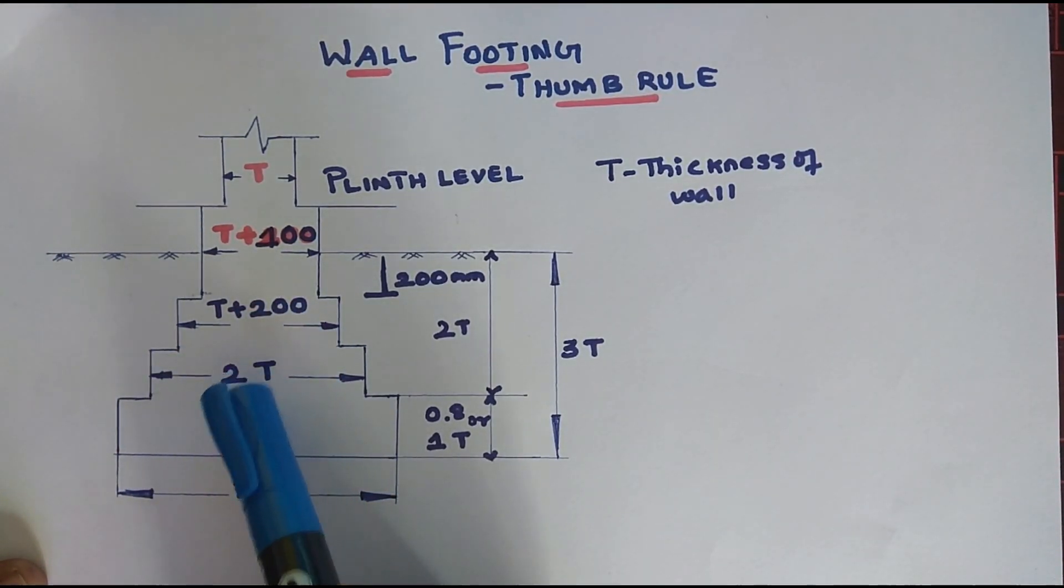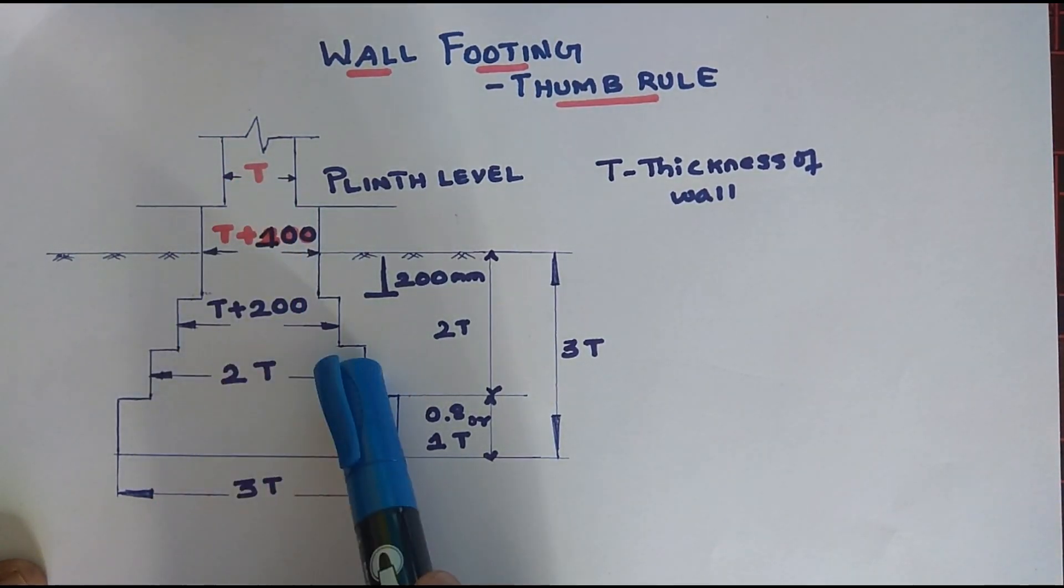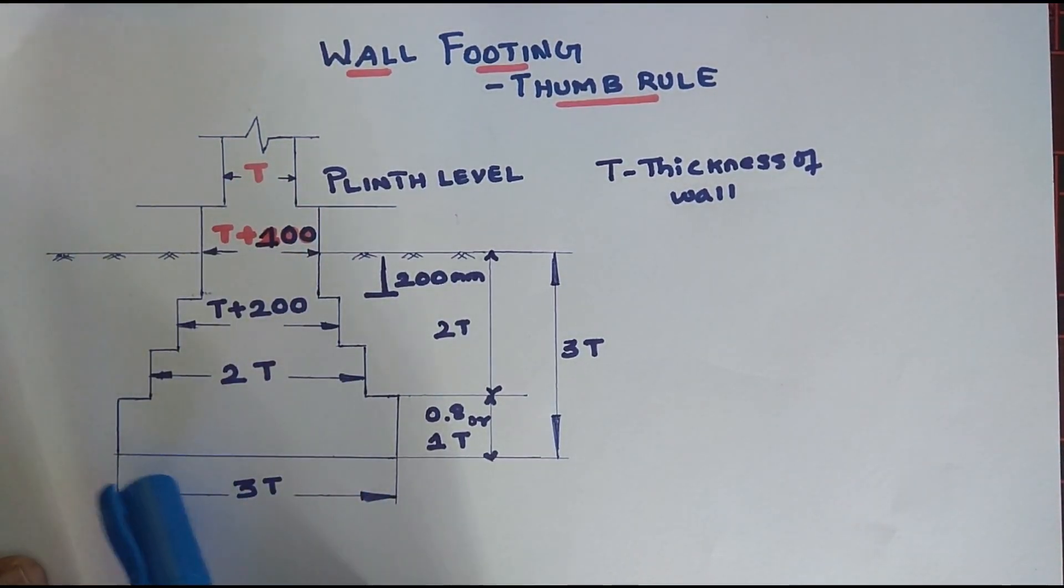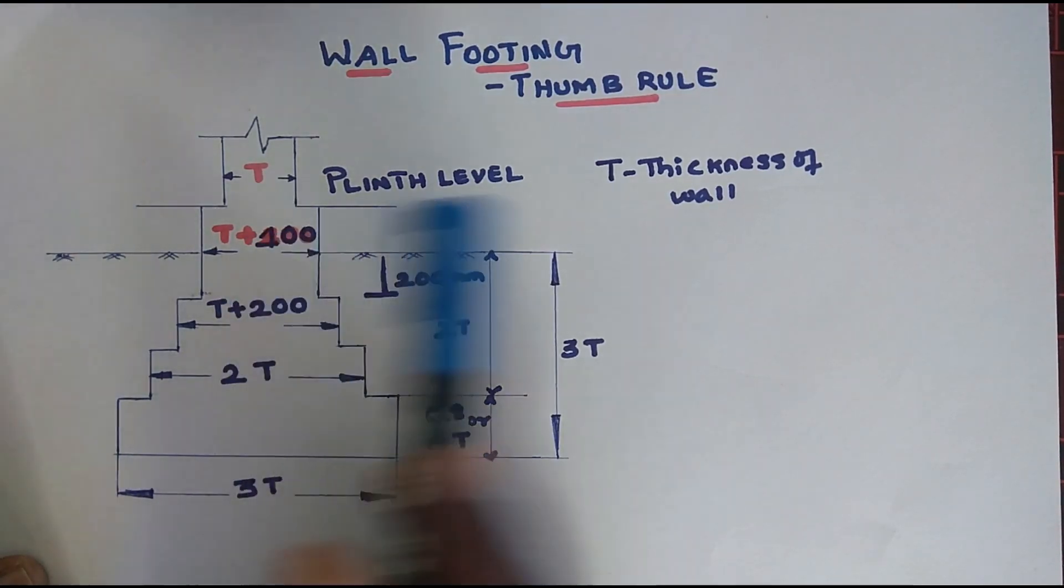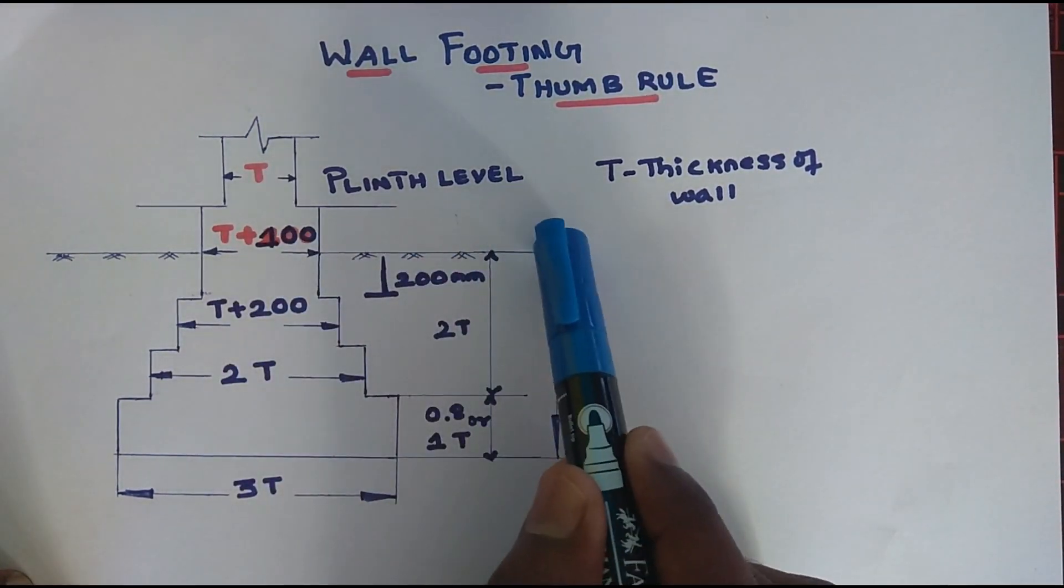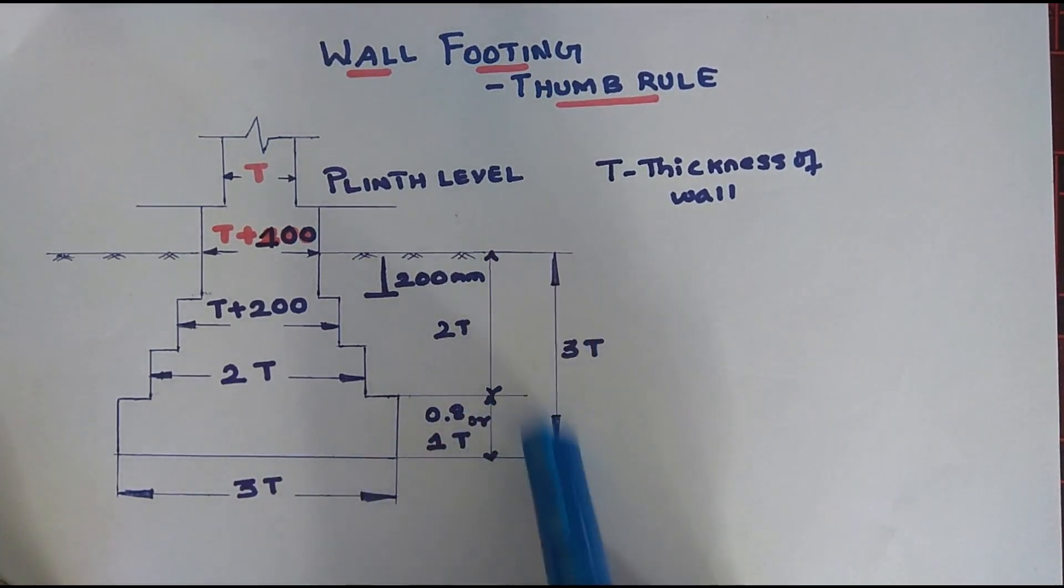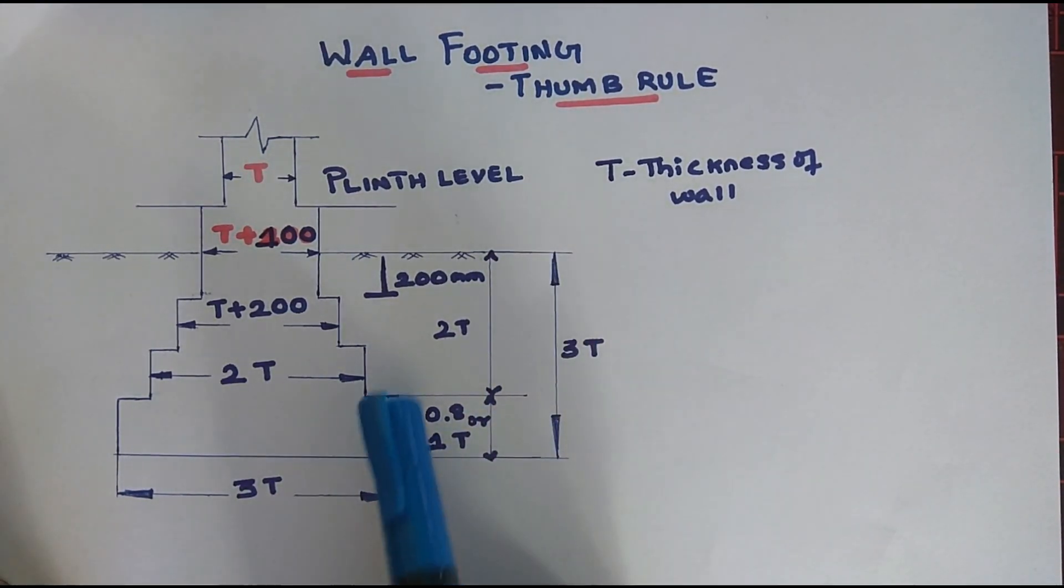The third step is 2 into T, 2 times the thickness of wall. We add this width. The thickness of wall, we add the width. Total depth is 3 into T. The same height we add for the depth.